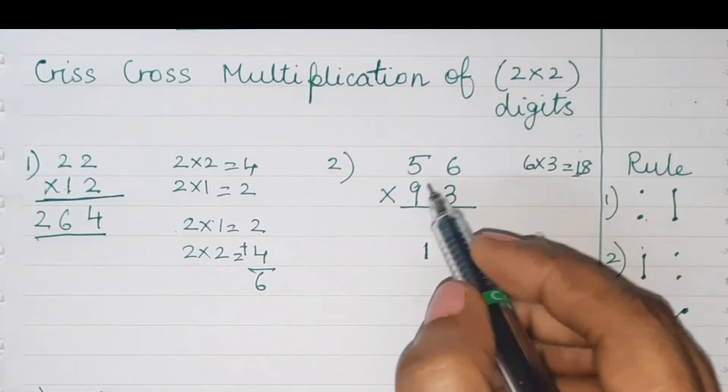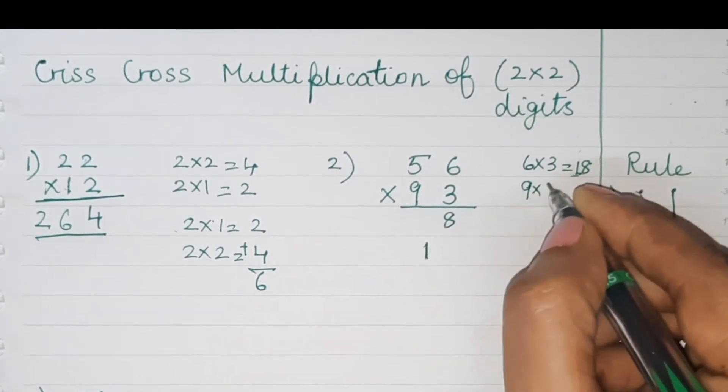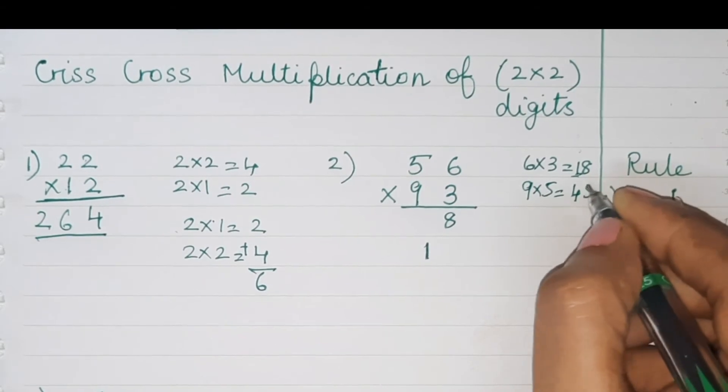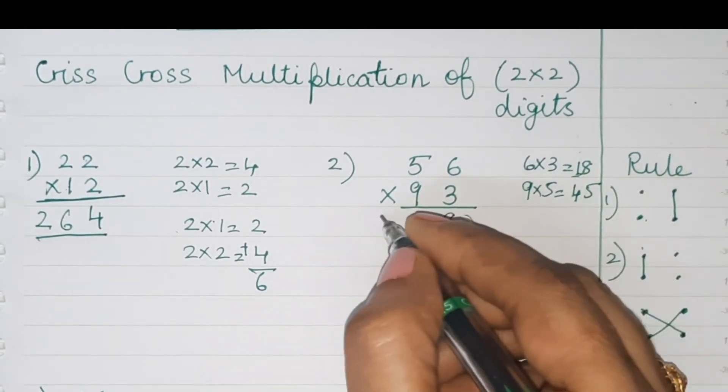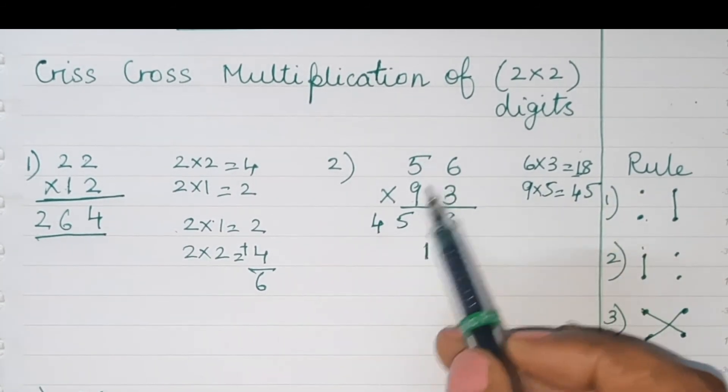Now digit on the left. Five and nine. Nine into five is 45. Write 45 as shown. Now we'll do cross multiply.